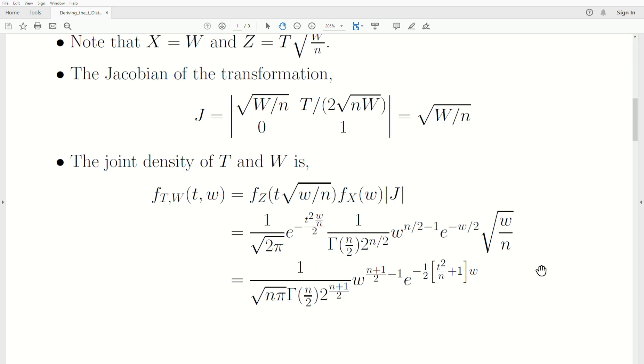Now let's simplify. What I want to simplify is to sort of isolate all the W's and then all the constants. So the n and the pi comes out, the gamma of n over 2, all the twos are brought here, 2 raised to the n plus 2 over 2.